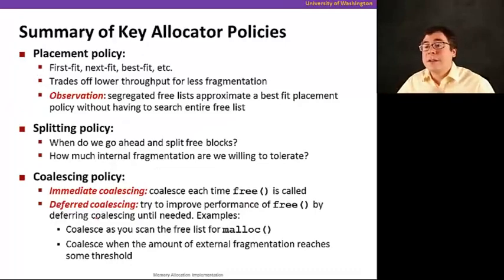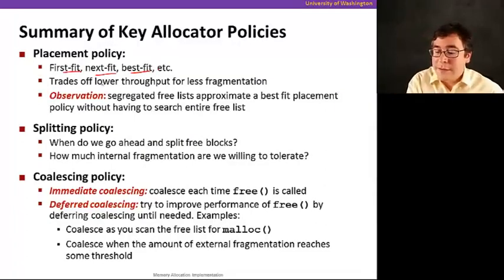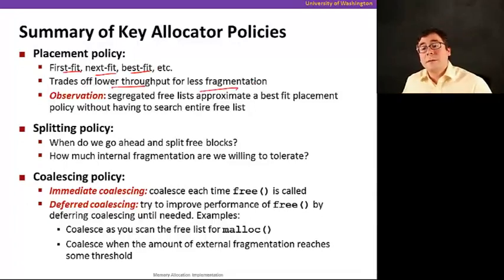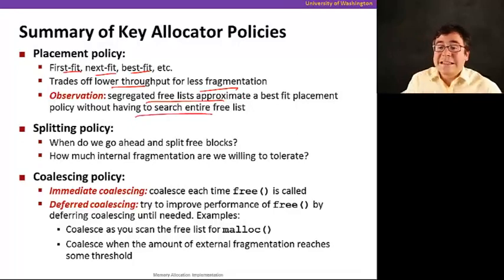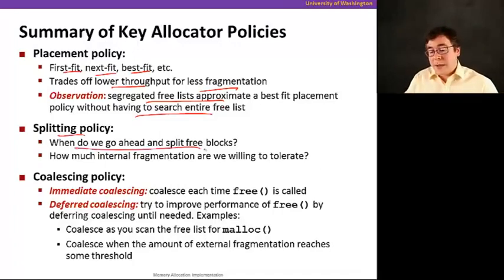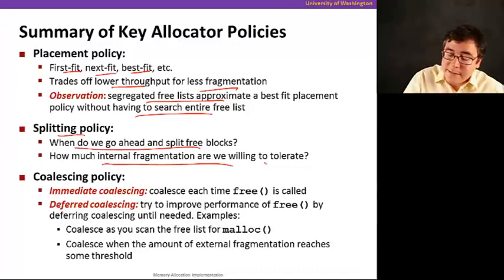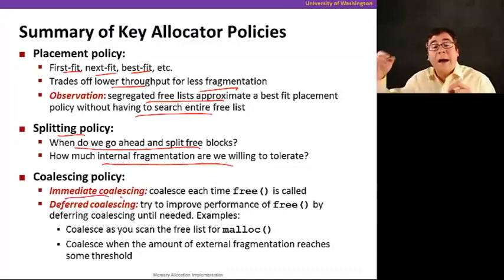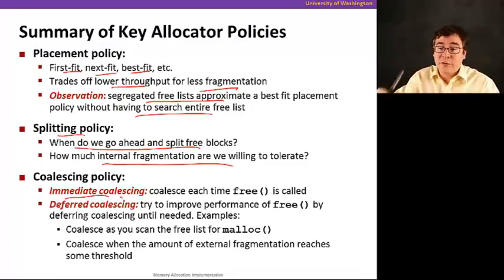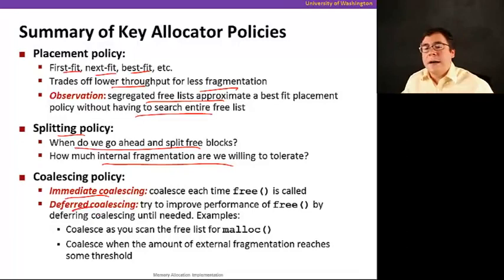To summarize the key allocator policies: the placement policy includes first fit, next fit, and best fit, which trade off throughput for fragmentation. Segregated free lists approximate best-fit placement without searching the entire free list. The splitting policy determines when to split free blocks, depending on how much internal fragmentation you're willing to tolerate. The coalescing policy can either coalesce immediately at free time — which has throughput implications since you do more work — or delay coalescing, which reduces per-free work but may increase fragmentation.